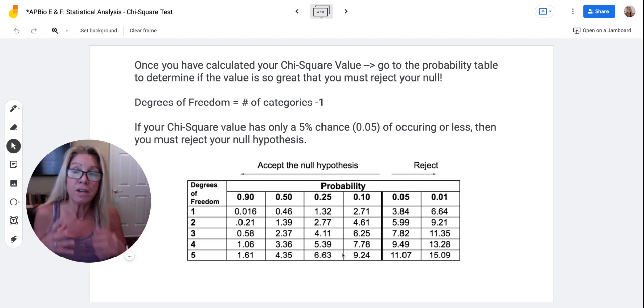Now if you have only two options, then your chi-square value is going to be a relatively small number. But if you have 3, 4, 5, 6 different options, then your chi-square number is just going to be a larger number.